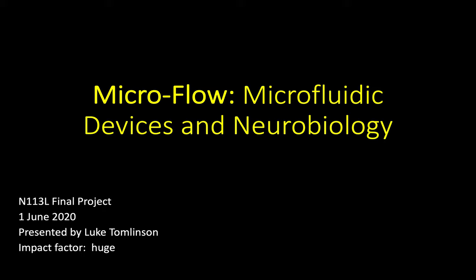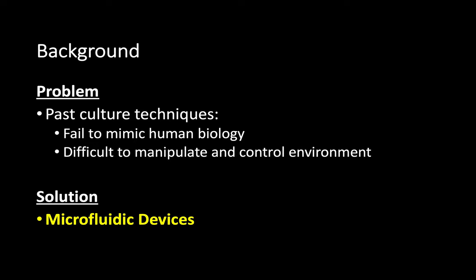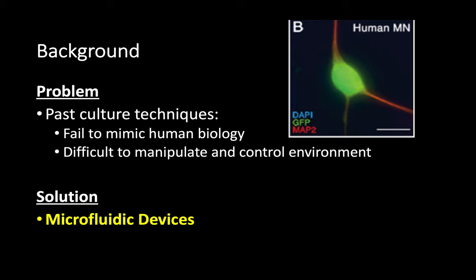Let's go to some background first. When culturing neurons, previous methods were limited in their ability to control precisely where neurons grow. For example, examine a single neuron with just three branching axons.